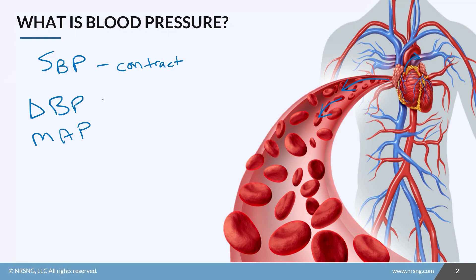Diastolic blood pressure is the pressure within the vessels between beats, or when the heart is relaxing during diastole. When we report a blood pressure, we report systolic over diastolic — so it would be like 120 over 80.